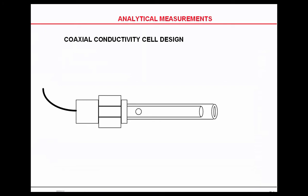That's just a picture of the contacting conductivity. The flow comes in through the right, through the unit, and comes out through the hole in the left. Therefore, the water is passing by both of those positive and negative plates.